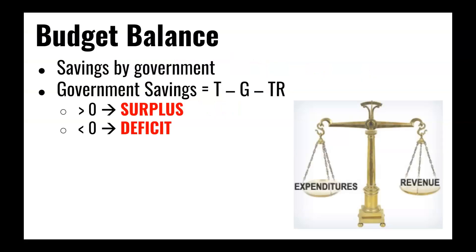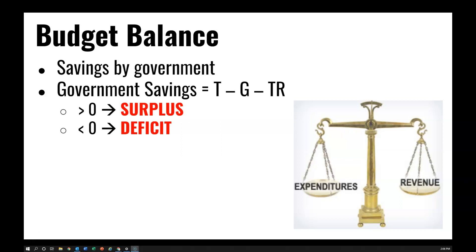When it comes to government debt, we talk about the budget balance — that's the savings by the government. We define government savings as taxes minus government spending minus transfer payments. If we are collecting more in taxes than we spend, then we have a budget surplus. If we are taxing less than we spend, then we have what's known as a deficit. Continued deficits add up to equal the government's overall debt.